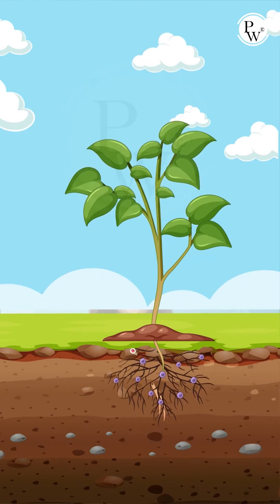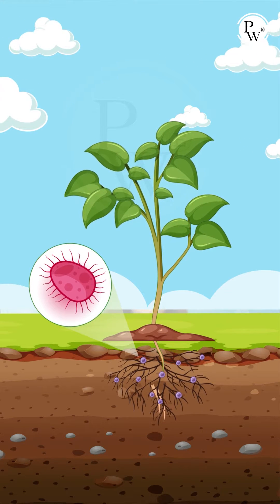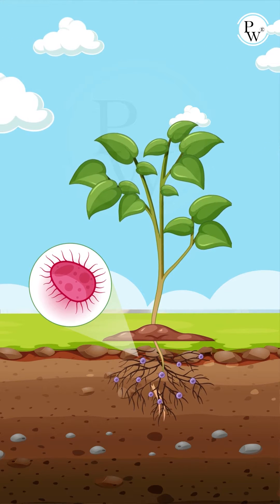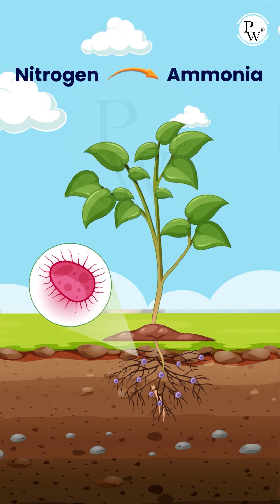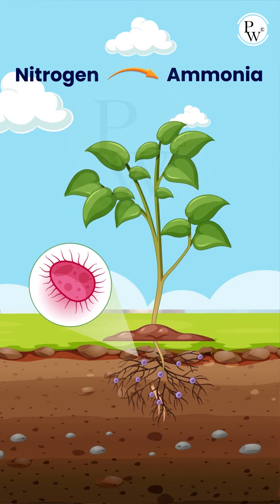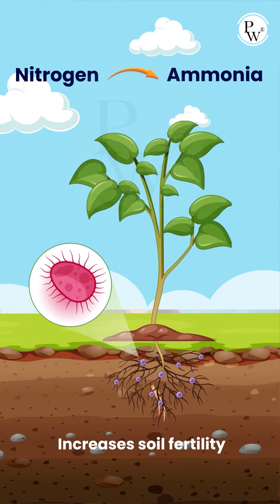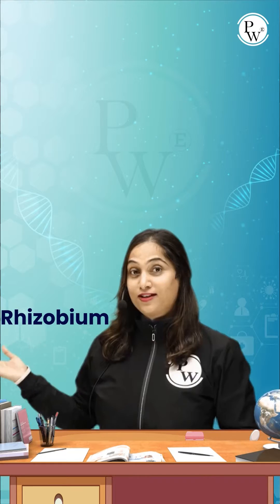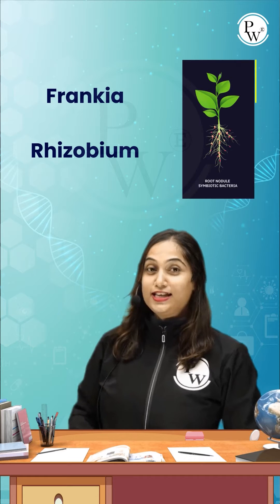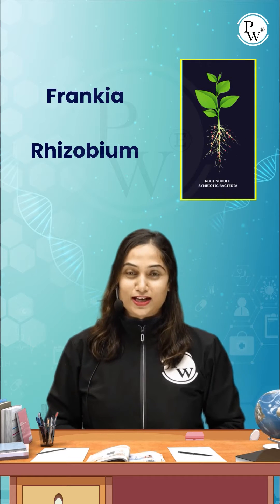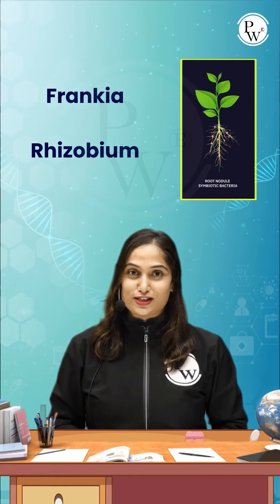Bacteria are nitrogen fixers, meaning they can fix atmospheric nitrogen to form ammonia, which increases soil fertility. Rhizobium and Frankia are symbiotic nitrogen fixers.